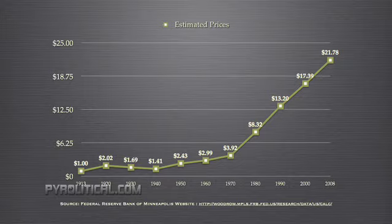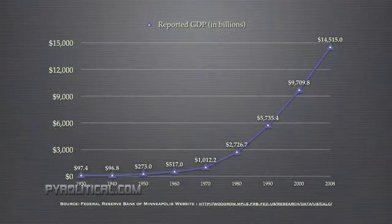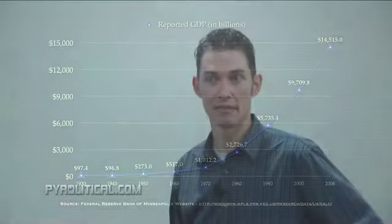Now let's look at the GDP. Remember what we talked about with Keynesian economics — we constantly want to inflate the dollar through spending, which increases our GDP so we can spend more. Here's the reported GDP: it started in 1930 at $97.4 billion, moving up until today at $14 trillion, 515 billion dollars. That's a lot of dollars — a healthy economy, right?